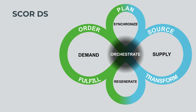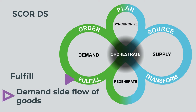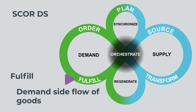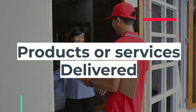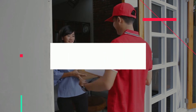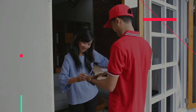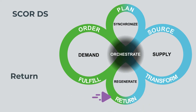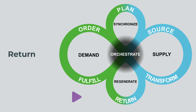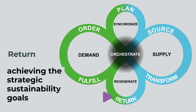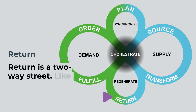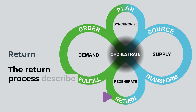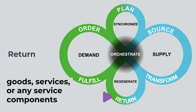Now let's return to the demand side. FULFILL is about the demand side flow of goods. Once the order has been processed, the materials sourced or services delivered, and products or services created by the TRANSFORM processes, we are ready to deliver the products from the customer order — completing the demand side of the horizontal infinity loop. RETURN is at the bottom of the vertical infinity loop on the REGENERATE side. RETURN can be critical for achieving the strategic sustainability goals of the company. Like PLAN, it is a two-way street that affects both demand and supply. The return processes describe the activities associated with the reverse flow of goods, services, or any service components from a customer.